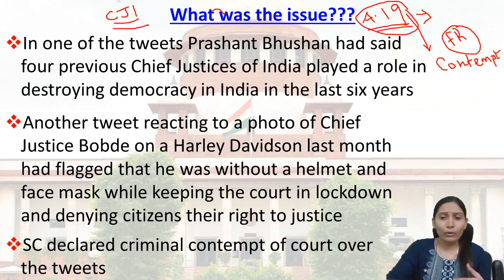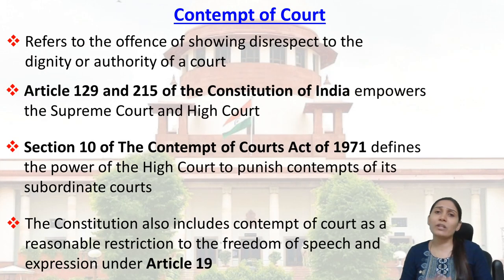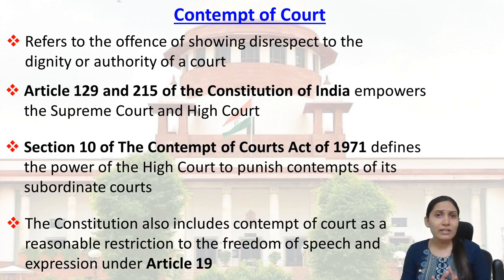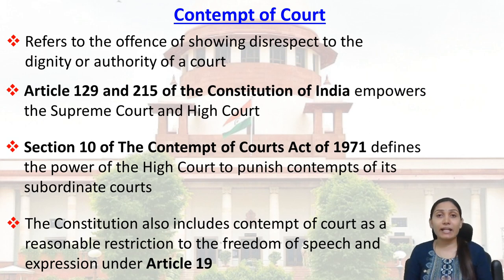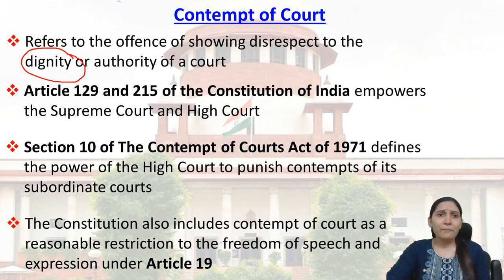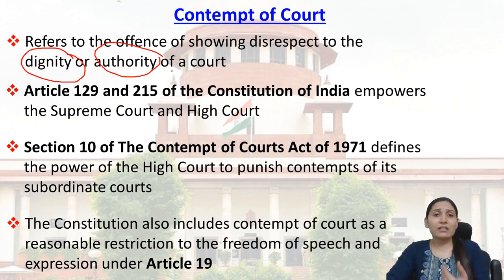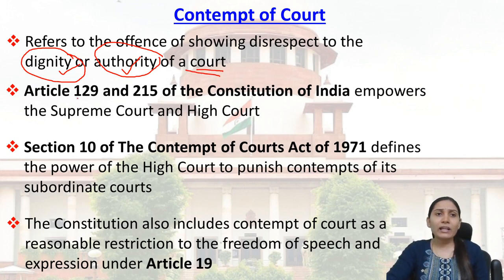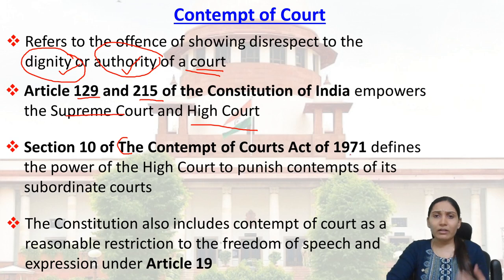Now let's understand what is meant by contempt of court. Contempt of court refers to an offense of showing disrespect to the dignity or authority of a court. The judiciary enjoys utmost dignity and authority, and if disrespect is shown toward that dignity or authority, it is seen as contempt of court. Article 129 and Article 215 of the Constitution of India empower the Supreme Court and the High Courts respectively. Section 10 of the Contempt of Courts Act of 1971 defines the power of the High Court to punish contempt of its own subordinate courts.